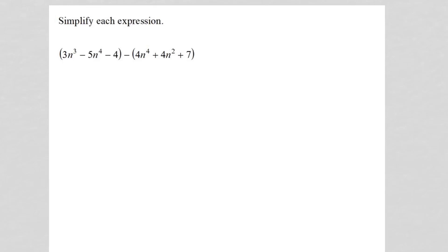The first thing I need to do here is distribute this minus sign to all three terms in the trinomial. So I'm going to rewrite this: 3n cubed minus 5n to the 4th minus 4 minus 4n to the 4th minus 4n squared and minus 7.